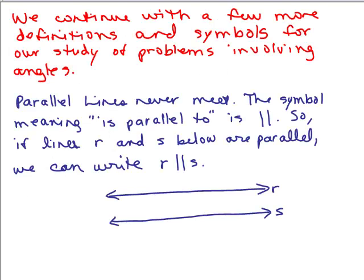So we're going to begin by coming up with a few more definitions and some symbols. First of all, parallel lines never meet. R and S below here are parallel and we use this symbol, the two vertical little lines here to mean is parallel to. So if I write R is parallel to S that's what it looks like.